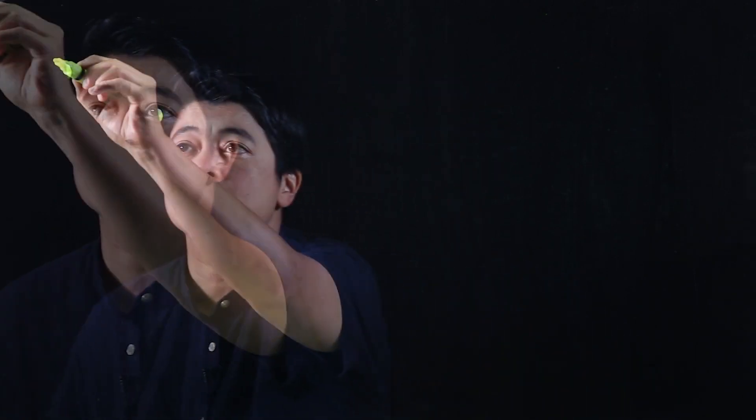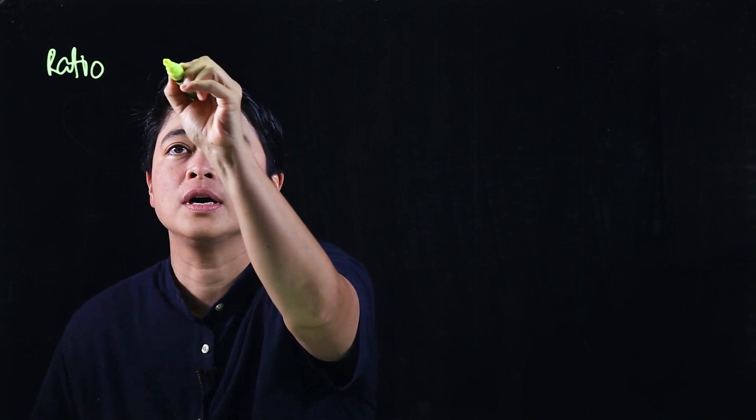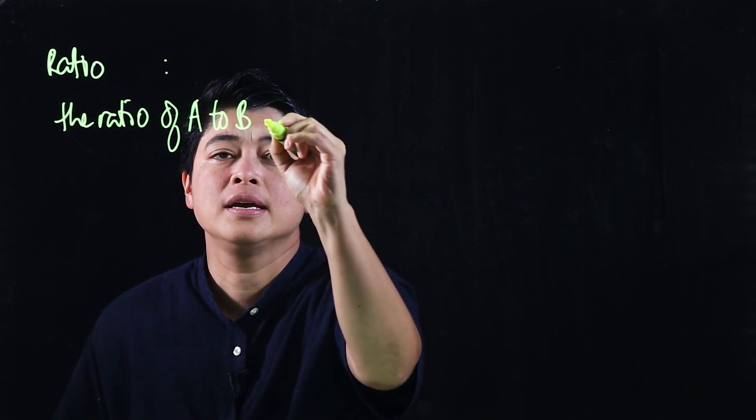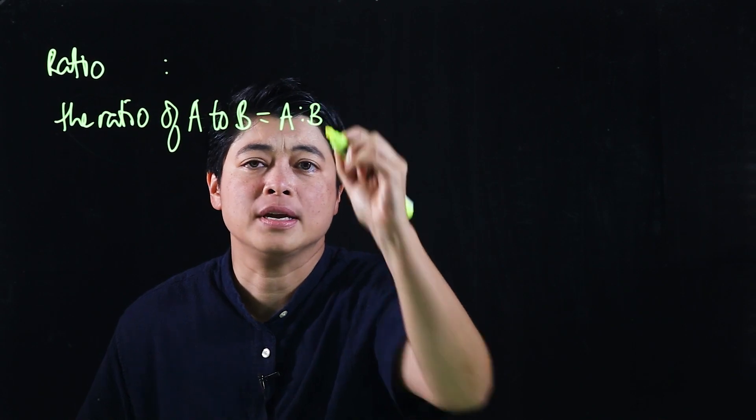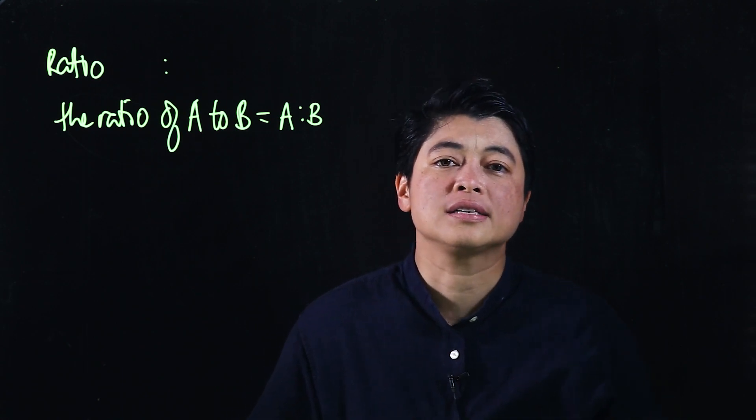Module 3 covers chapters 7 to 10. We'll begin with Chapter 7, which covers ratio. Chapter 7, Lesson 1 is finding ratios. This is a new topic. The logic behind ratio is it's separated by a colon. If it says the ratio of a to b, that equals a:b.